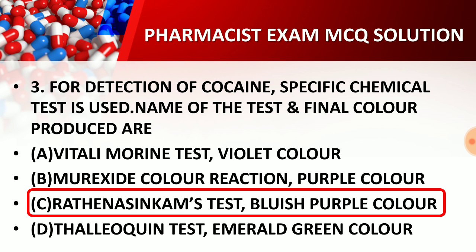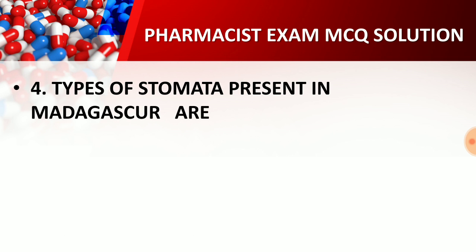For detection of cocaine, the specific chemical test used is Scott's test, and the color produced at the end of the test is blueish purple. Question number four: what type of stomata are present in Catharanthus roseus (Madagascar periwinkle)?